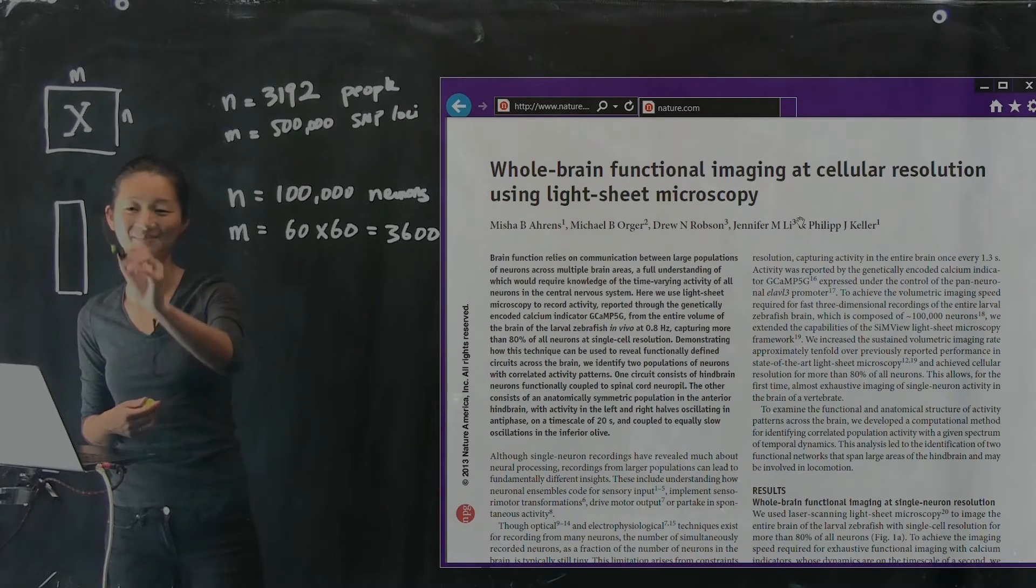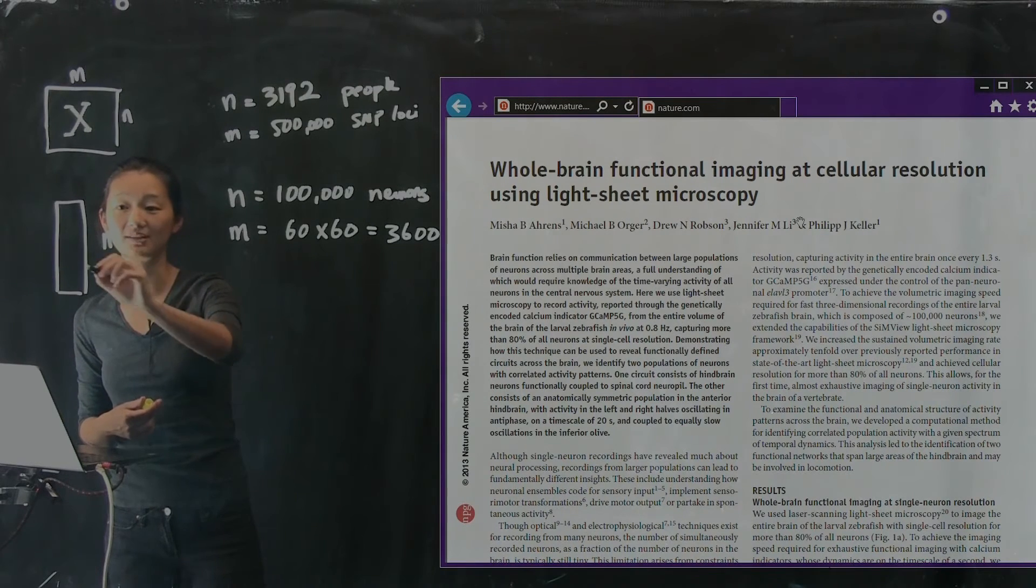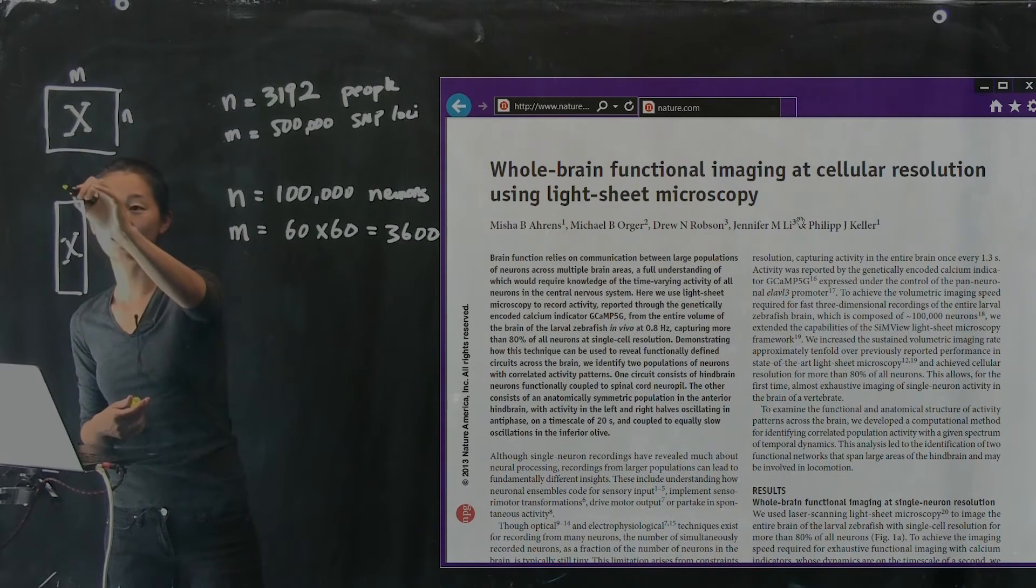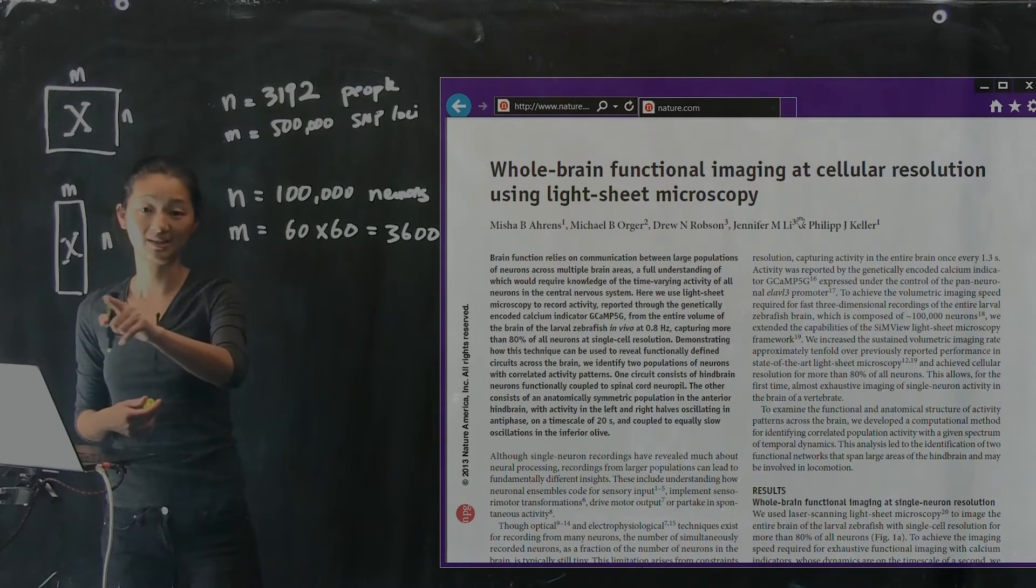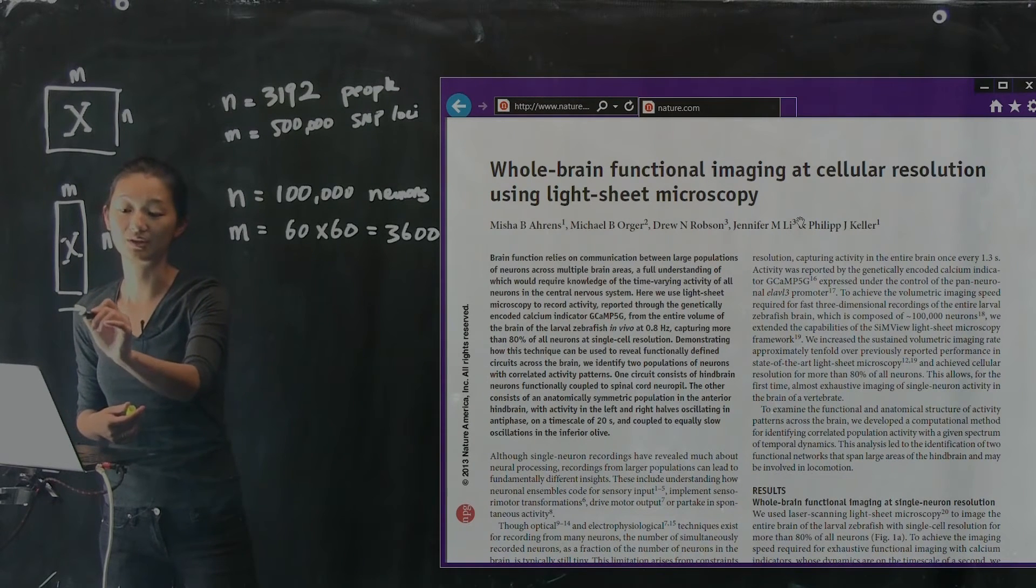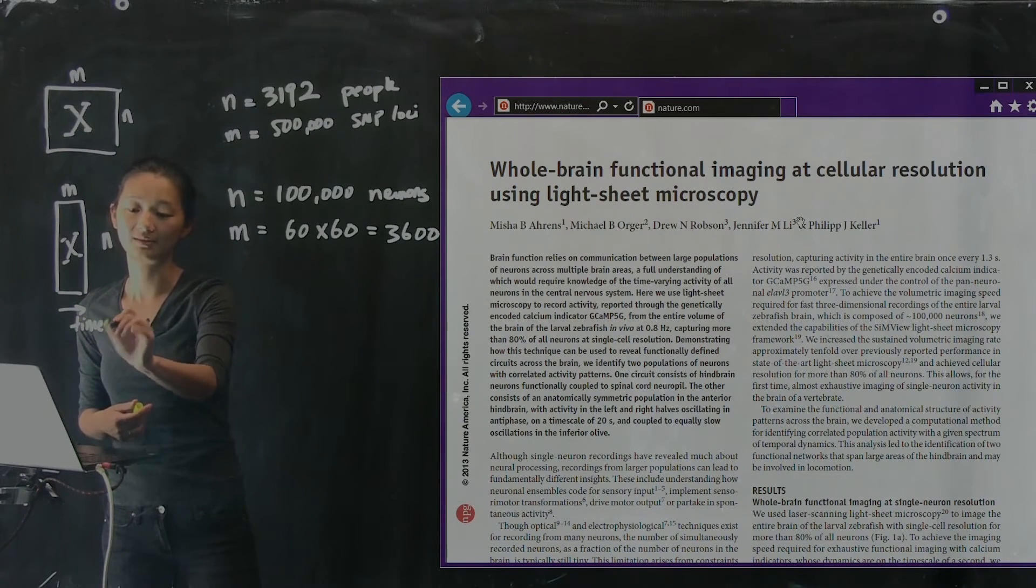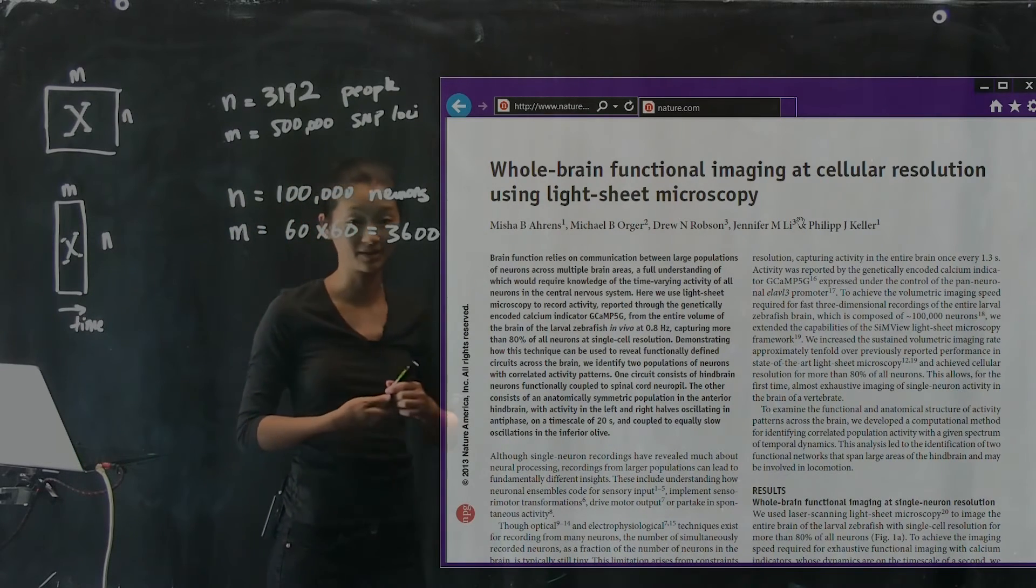So that's the number of measurements we have. So this data matrix here is going to be more like the following. I'm trying to draw it more to scale this time. So we have a bunch of neurons and a bunch of measurements in time for every single one of those neurons, where this is, in this particular case, time, okay?